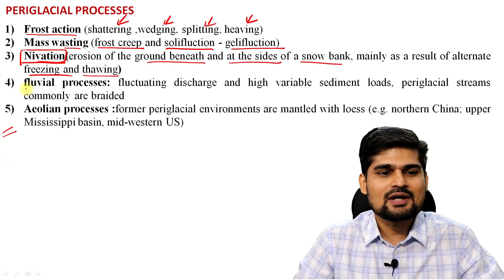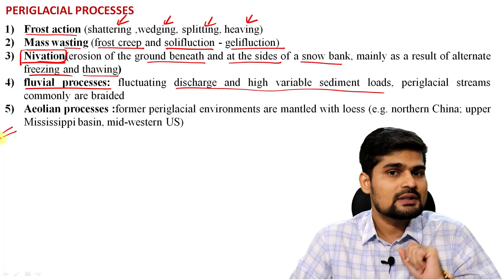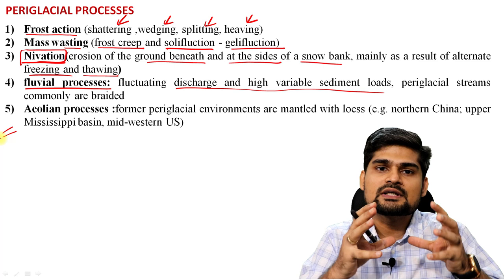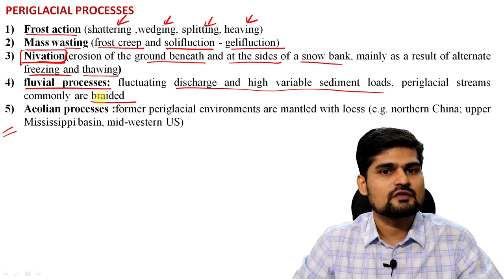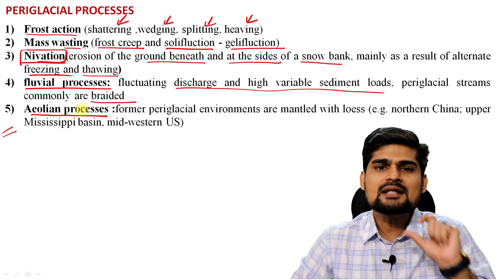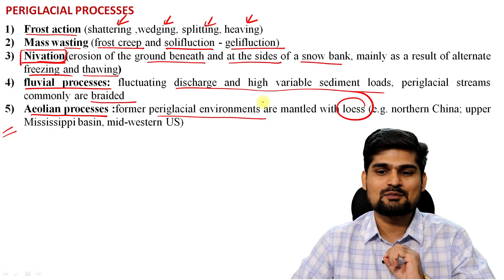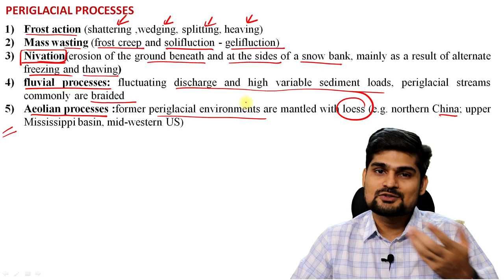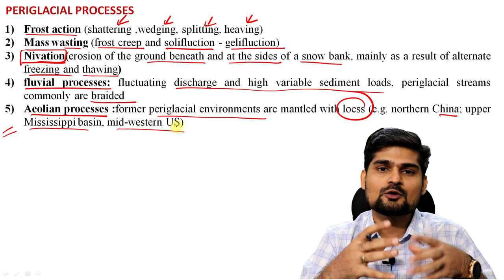The fourth process involves fluvial processes, which also operate here with fluctuating discharge and highly variable sediment load. The discharge fluctuates because of the seasonal shift — sometimes freezing, sometimes thawing. Periglacial streams are commonly braided channels, not smooth streams like typical fluvial areas. The fifth process is aeolian — wind is also an important agent. Periglacial environments are mantled with loess deposits. Northern China's loess going into the Huang Ho (Yellow River), upper Mississippi basin, and midwestern US all have fine wind-blown dust that accumulates and leads to different formations.